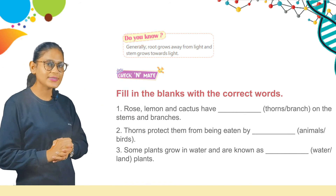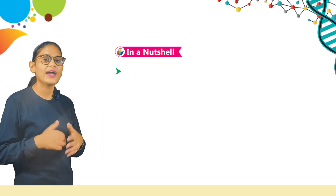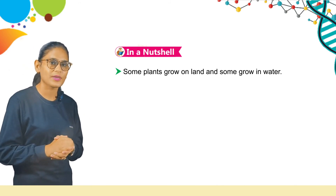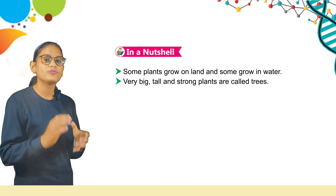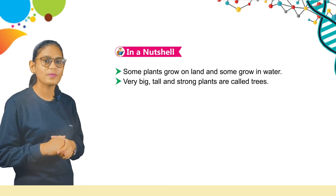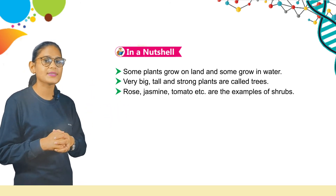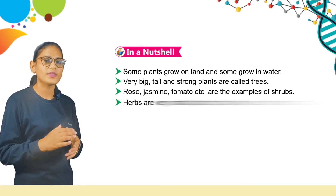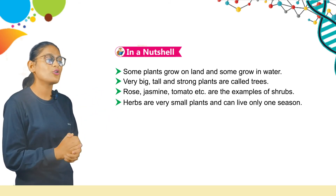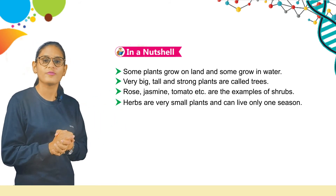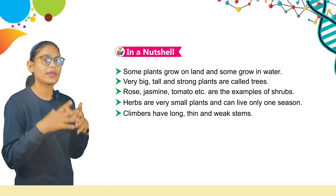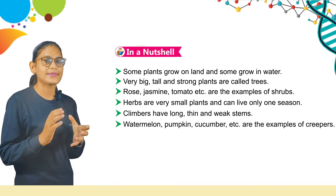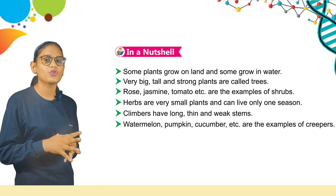What we learned in this chapter — let's discuss it in a nutshell. Some plants grow on land and some grow in water. Very big, tall, and strong plants are called trees. Rose, jasmine, and tomato are examples of shrubs. Herbs are very small plants and can live for only one season. Climbers have long, thin, and weak stems. Watermelon, pumpkin, and cucumber are examples of creepers.